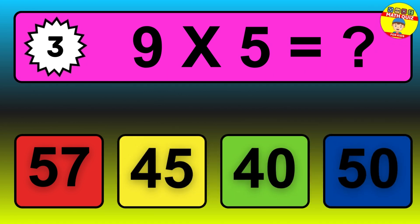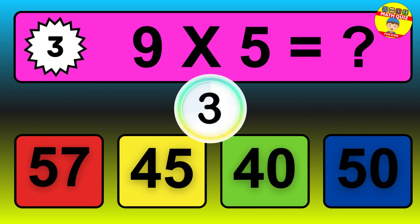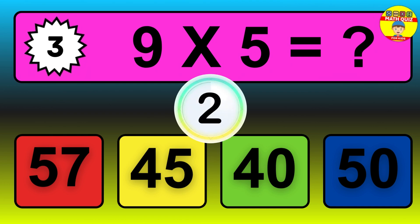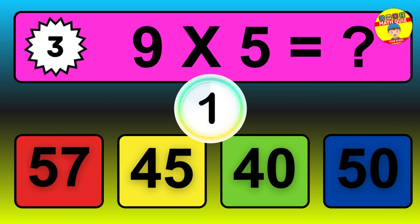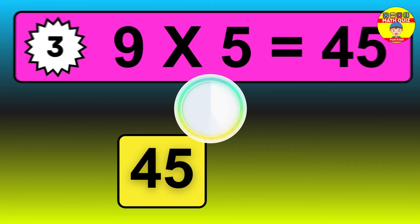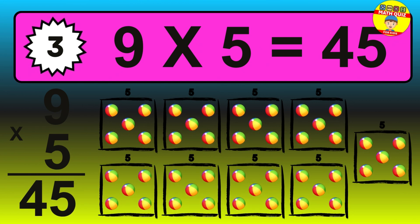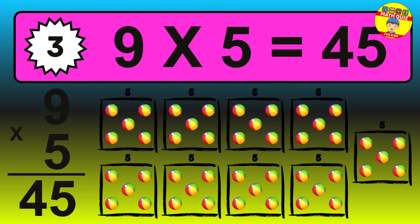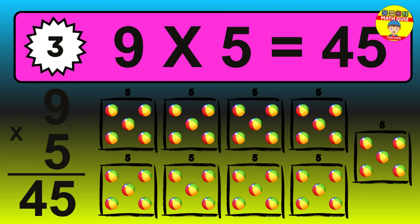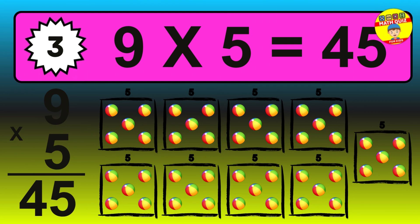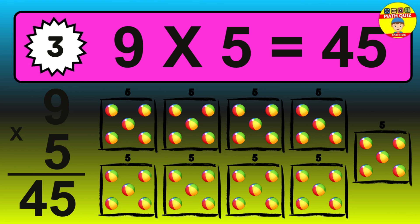Question 3. 9 times 5 equals what? The answer is 9 times 5 is 45. To calculate, we have 9 groups with 5 balls each one. So, how many balls do we have? 45 balls.